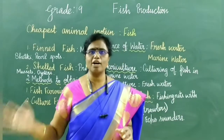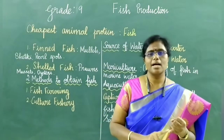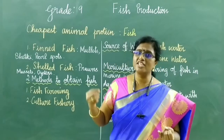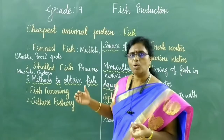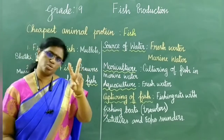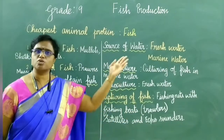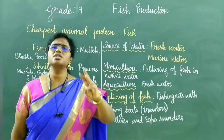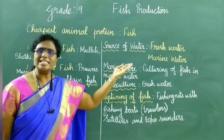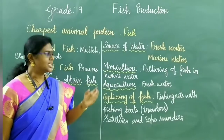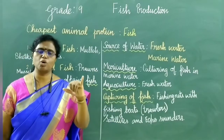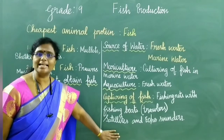Let me recall these points. Fish is the cheapest animal protein. There are two types of fish: finned fish and shelled fish. The two methods of obtaining fish are capture fishery and culture fishery. There are two sources of water: freshwater — lakes and ponds; and marine water — oceans and seas. Culturing fish in marine water is mariculture; in freshwater is aquaculture. Fish are captured using trawlers, satellites, and echo sounders.